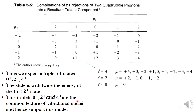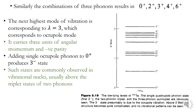The triplet states 0+, 2+, and 4+ are a common feature of vibrational nuclei and thus support this model. Combining three quadrupole phonons results in states: 0+, 2+, 3+, 4+, and 6+.